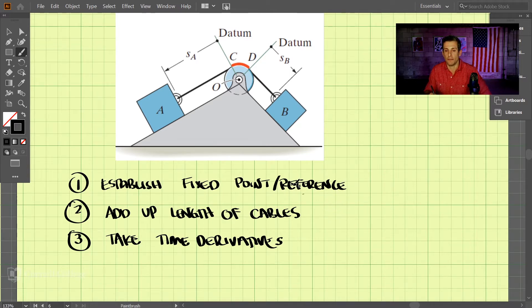So let's go ahead and start doing this. We add up the length of the cable. So let's start over here. We have SA plus this length from C to D, which is the length over top of the pulley, and then SB. And that equals the total length of this cable, so LT here.